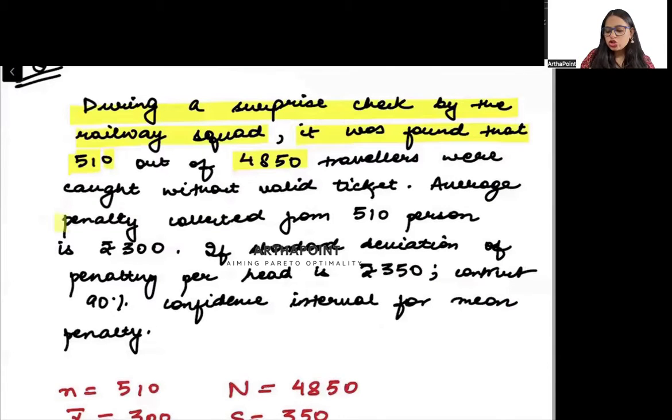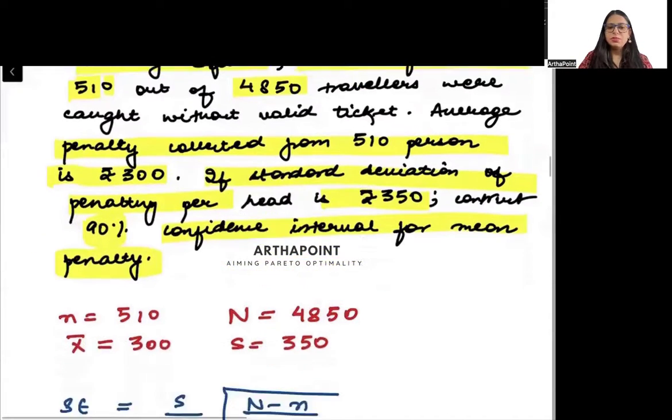The average penalty collected from 510 persons is 300. If the standard deviation of penalty is 350, construct a 90% confidence interval for the mean penalty.